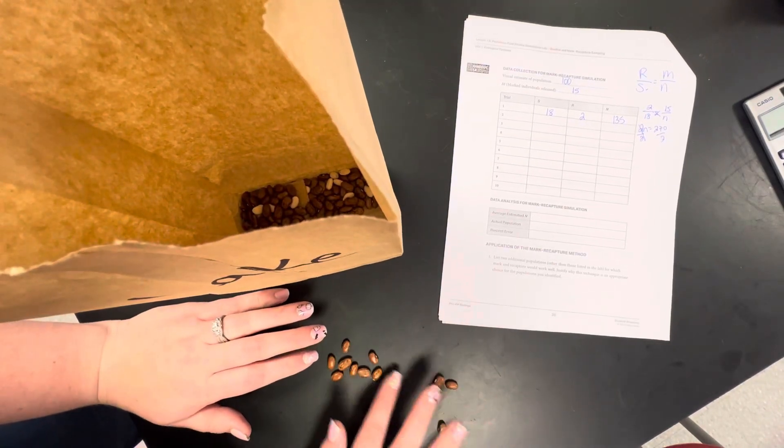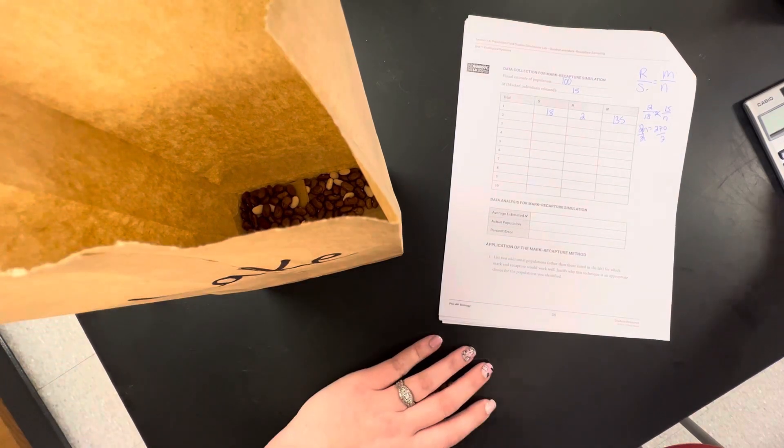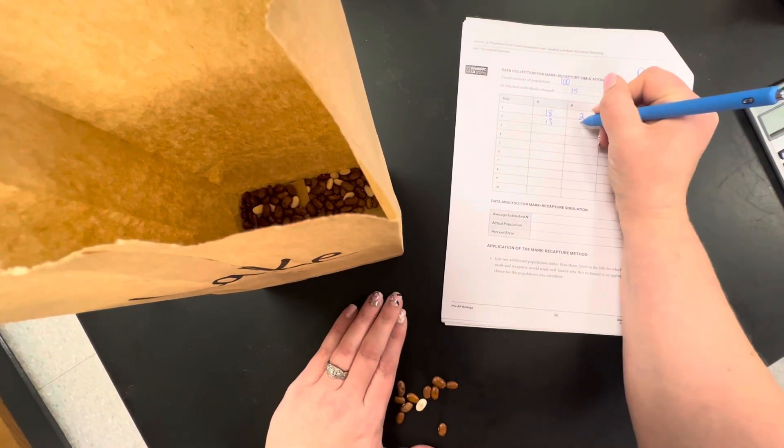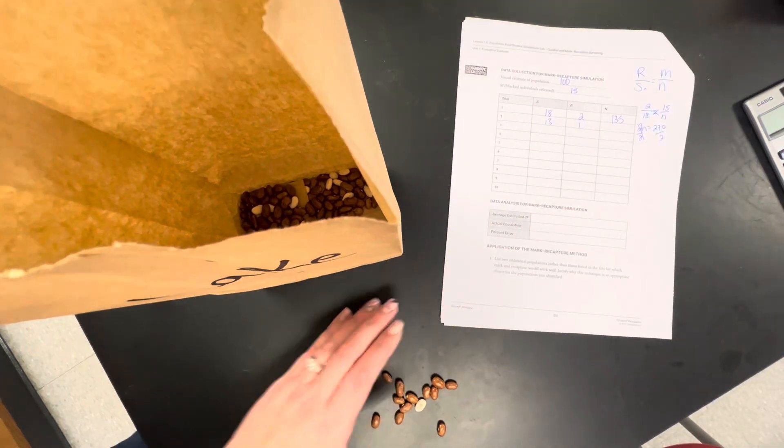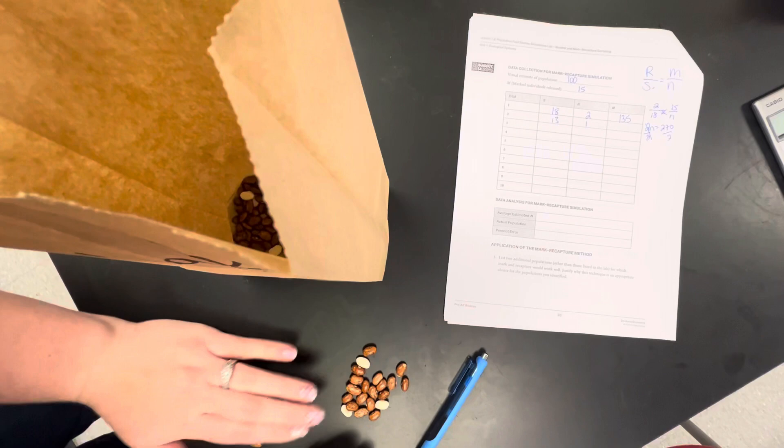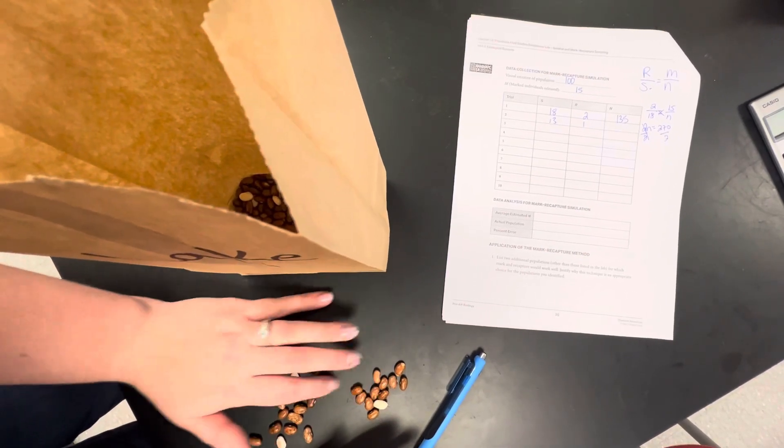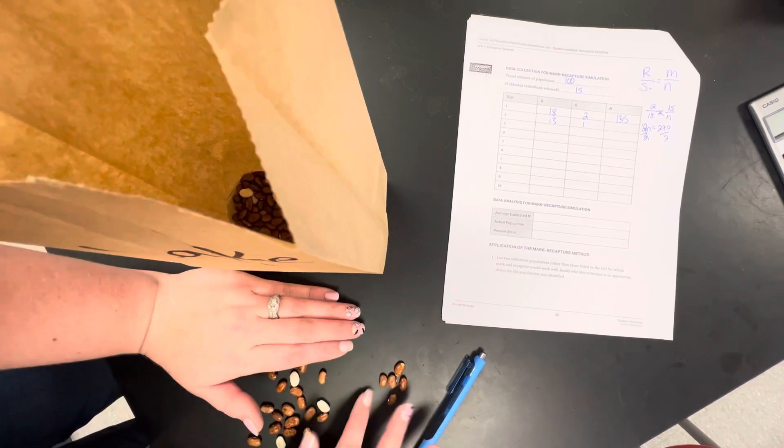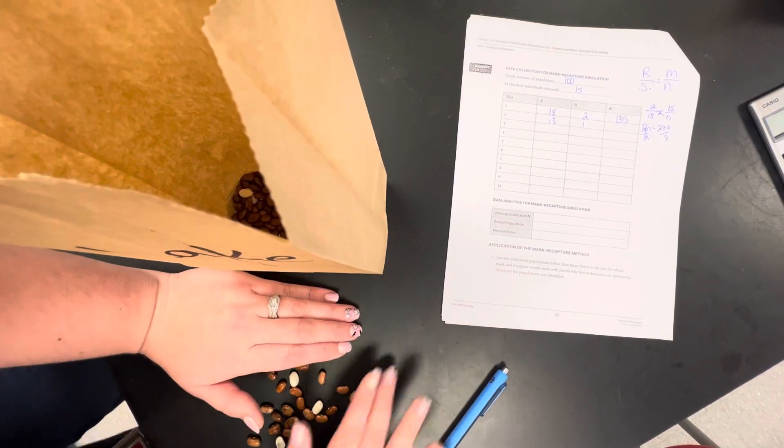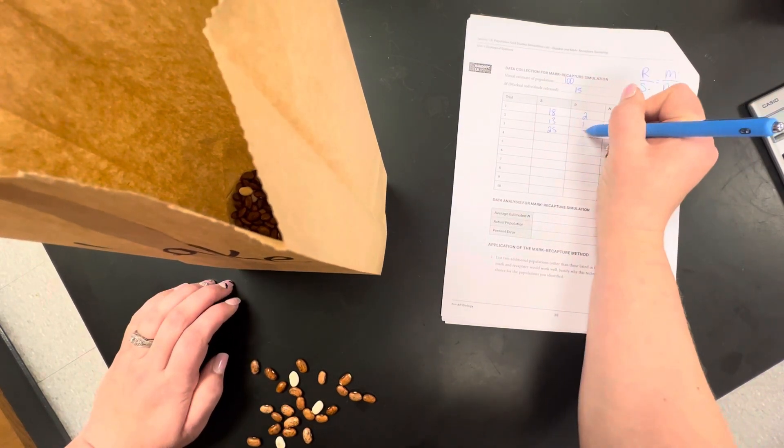So I have 1, 2, 3, 4, 5, 6, 7, 9, 10, 11, 12, 13 this time. And of that 13 only 1, 2, 3, 4, 5, 6, 7, 8, 9, 10, 11, 12, 13, 14, 15, 16, 17, 18, 19, 20, 21, 22, 23, 24, 25. And of those 3 were marked.